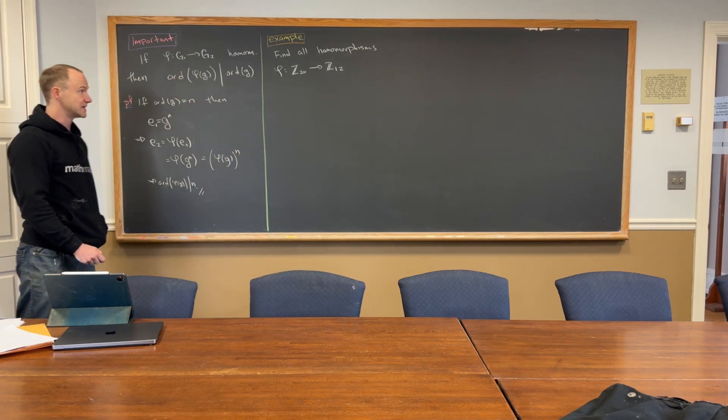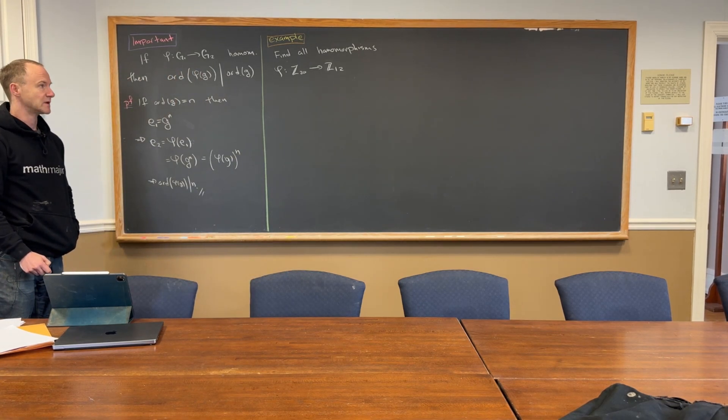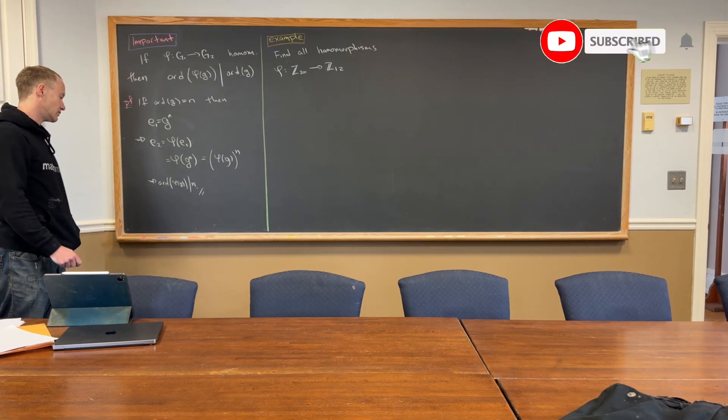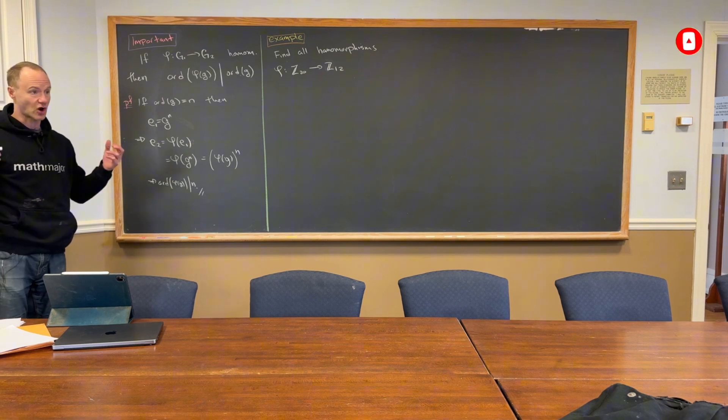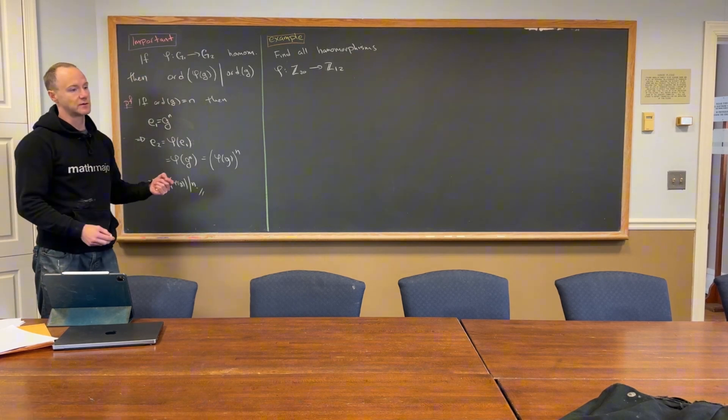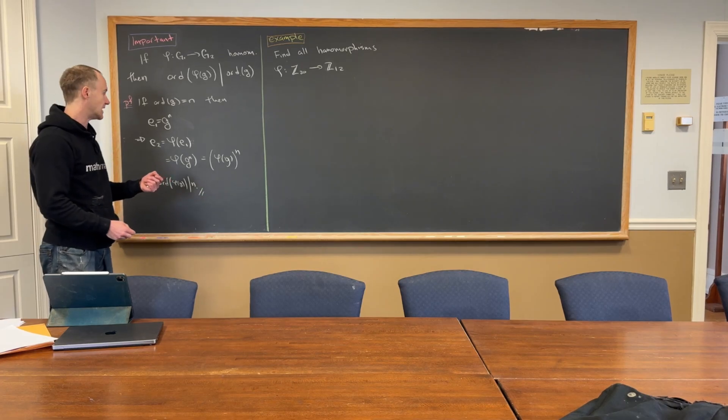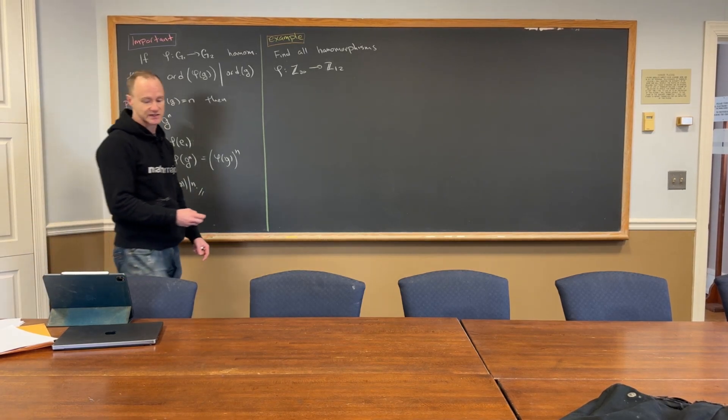So like I said, this seems kind of impossible at first, right? But if you take advantage of these two structural tricks of, first of all, the group, so the domain, and then this result right here about this order business, it's actually not so bad.